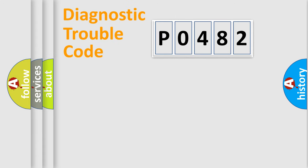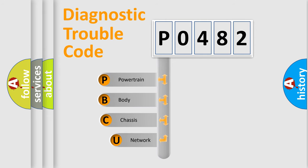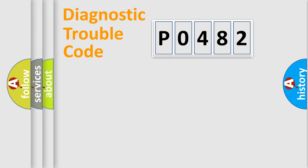Let's do this. First, let's look at the history of diagnostic fault code composition according to the OBD2 protocol, which is unified for all automakers since 2000. We divide the electric system of an automobile into four basic units: Powertrain, Body, Chassis, and Network.